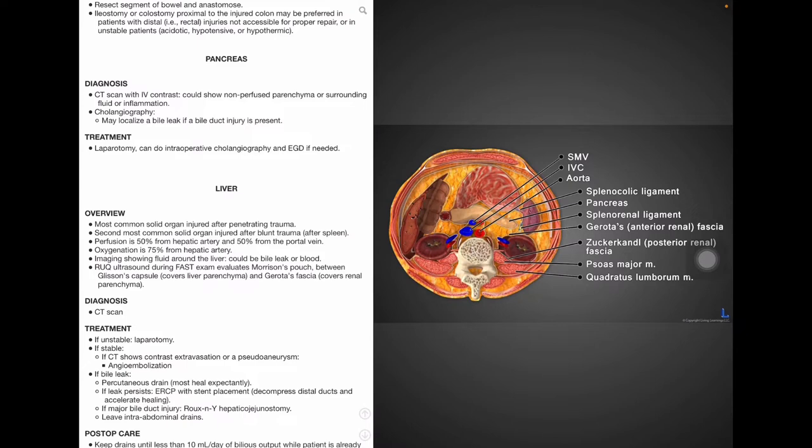The liver. The liver is the most common solid organ injured after a penetrating trauma and second most common solid organ injured after a blunt trauma following the spleen. The liver has a dual blood supply, one from the hepatic artery and the other half from the portal vein. So each contribute 50% of the liver's perfusion. Moreover, 75% of the oxygenation comes from the hepatic artery specifically. Preferably using CT for diagnosing. A bile leak or a blood leak is seen on imaging as fluid surrounding the liver. An ultrasound of the right upper quadrant can be performed to allow visualization of Morrison's pouch between Glisson's capsule, which covers the liver parenchyma, and the Gerota's fascia, which covers renal parenchyma.